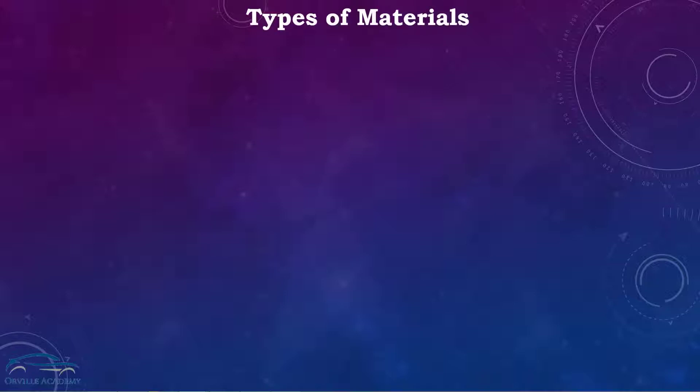Hello everyone, welcome to our interview series. In today's session we will see what are the different classifications of materials. We already know that materials can be classified as metals, ceramics, polymers, and composites. But there is another classification of material based on how the property is going to change with respect to direction.